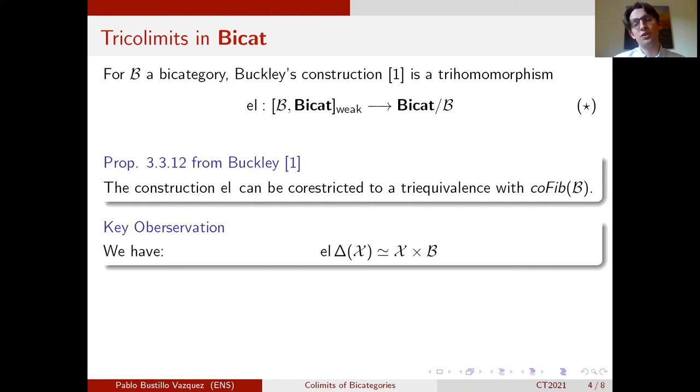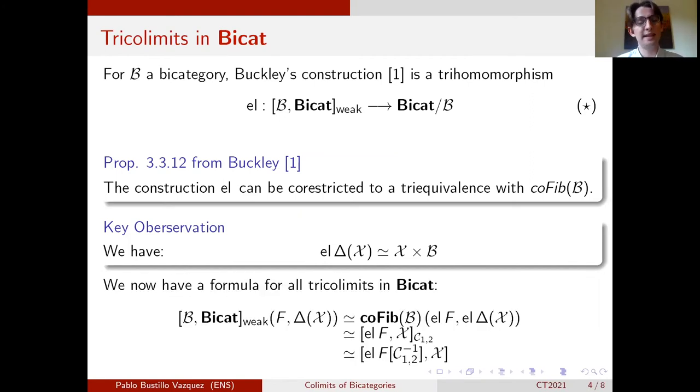And in our paper, we just add a small key observation that the Grothendieck construction actually is a generalization of the disjoint union. And when you see it as such, you realize that if you do the Grothendieck construction of a constant functor, you should get the constant multiplied by the index. And so by taking a look at Buckley's results in our key observation, we get a three-line proof of essentially the computation of all conical tricolimits in bicats.